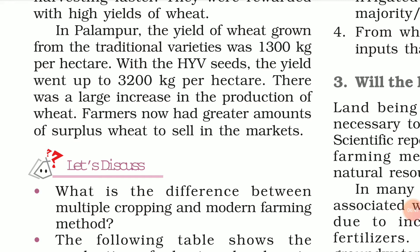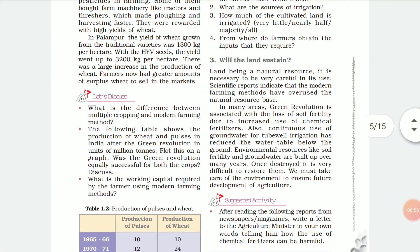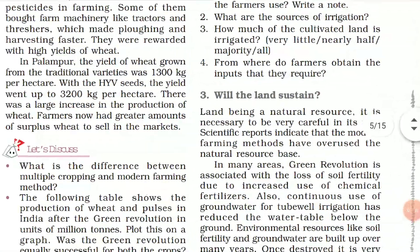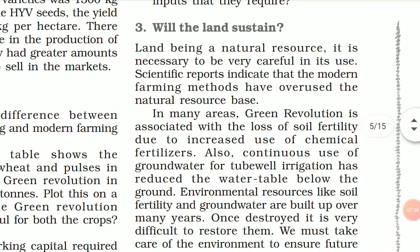There was a large increase in production of wheat, and farmers now had a greater surplus to sell in the market. For example, if 1,300 kg were produced earlier with 300 kg consumed, only 1,000 kg was left to sell. But with 3,200 kg produced and 300 kg consumed, approximately 2,900 kg was available to sell — about 1,900 kg more than before.